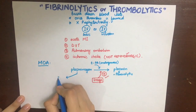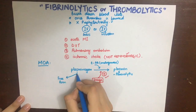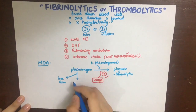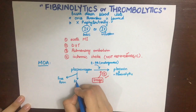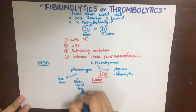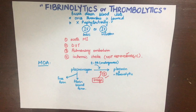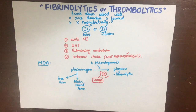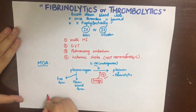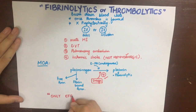The drugs we use as fibrinolytics or thrombolytics will potentiate the effects of tissue plasminogen activator and thus the production of plasmin. They act by catalyzing the formation of endogenous fibrinolytic plasmin, which is a serine protease, from its precursor plasminogen.